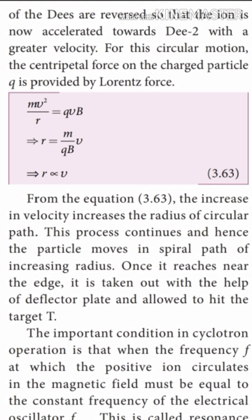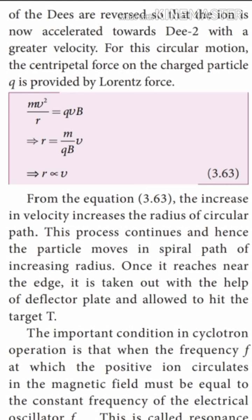Equation 3.63 means the increase in velocity increases the radius of the circular path. This process continues until the particle moves in a spiral path of increasing radius. Once it reaches near the edge, it is taken out with the help of a deflector plate and allowed to hit the target. The particle coming out of the deflector plate is highly energetic.